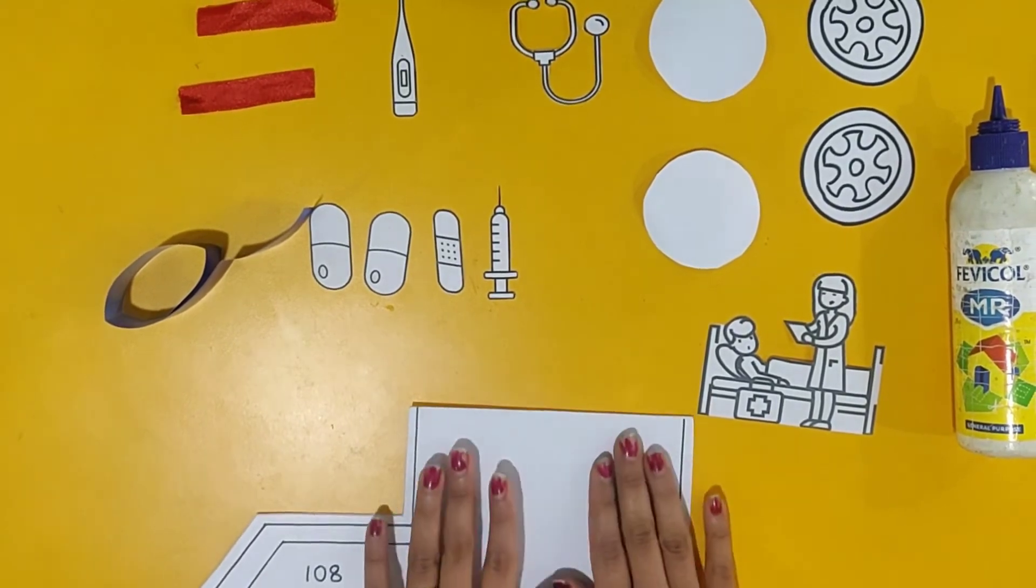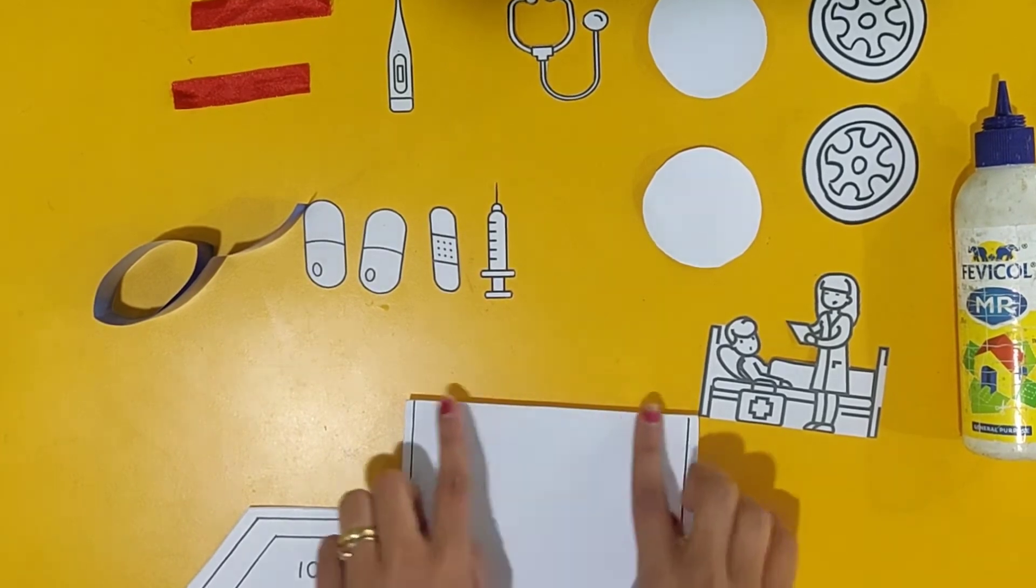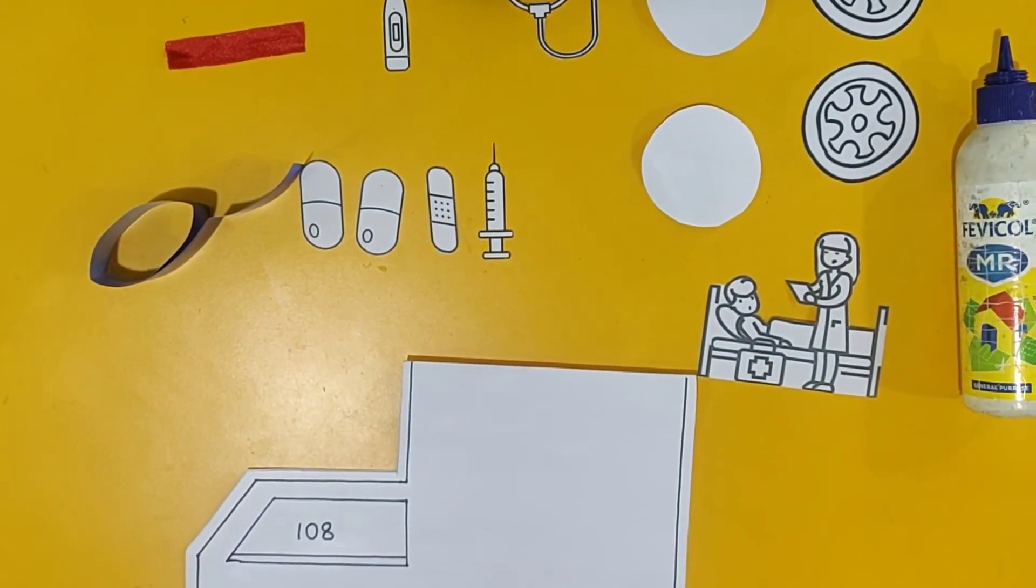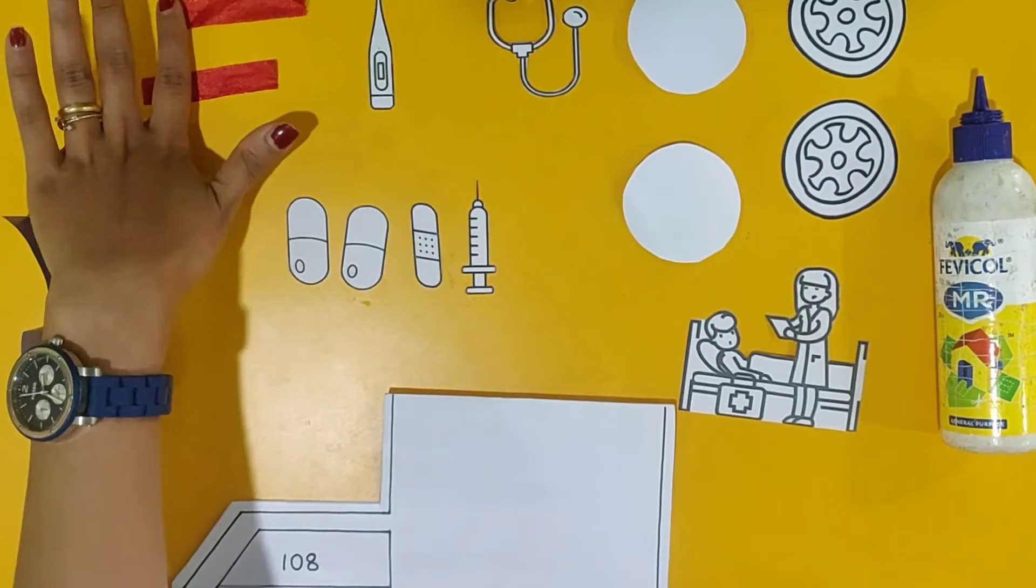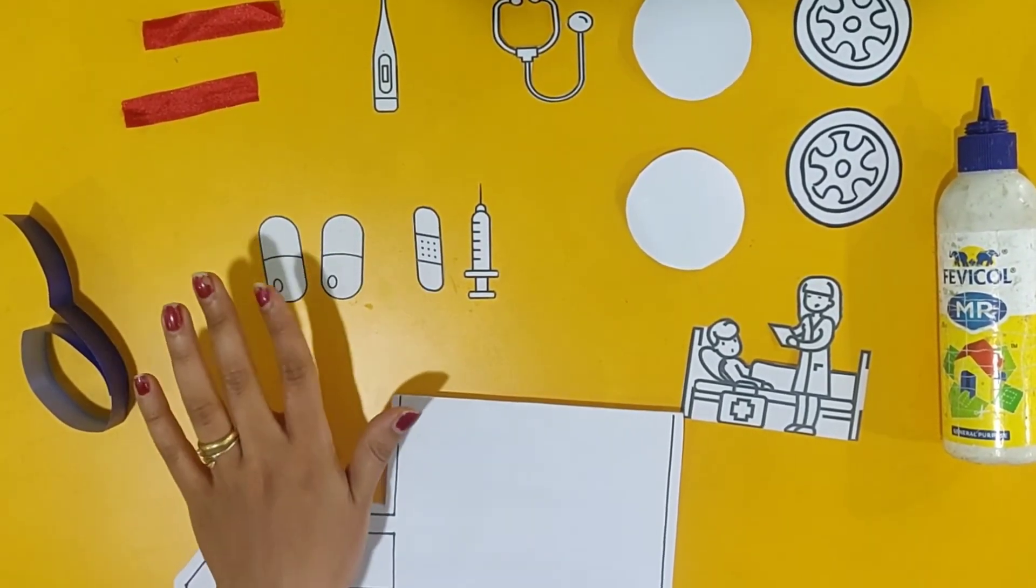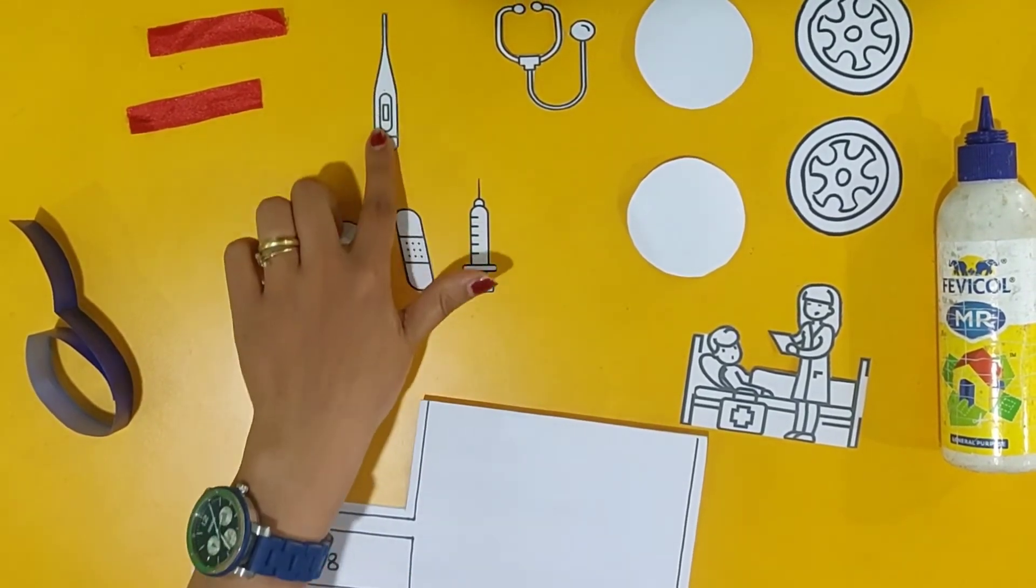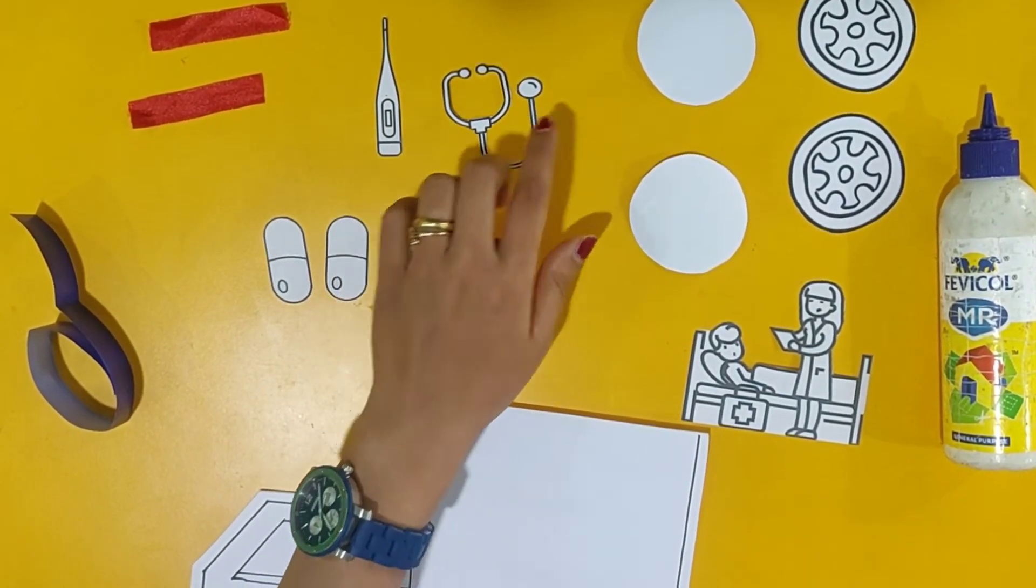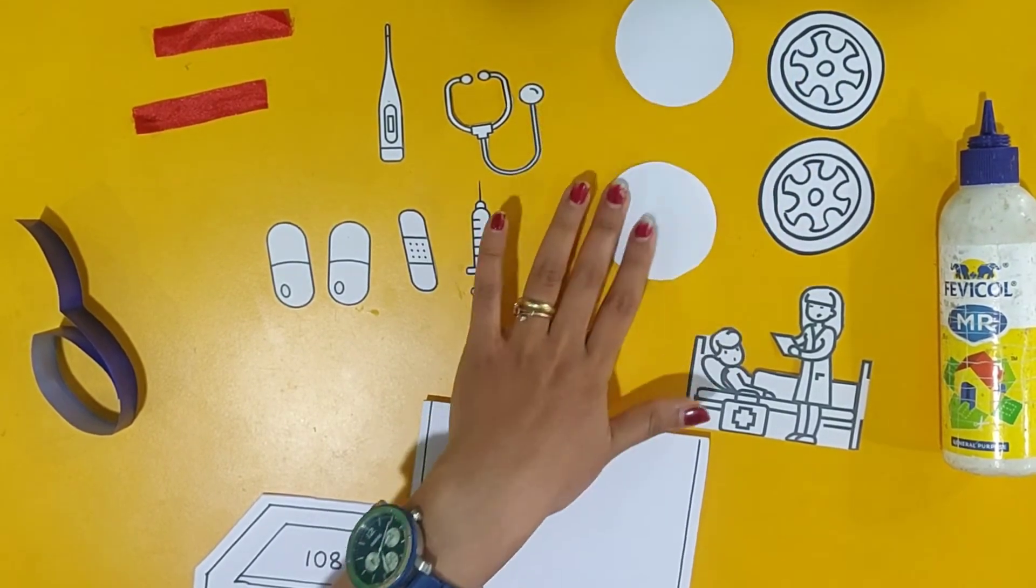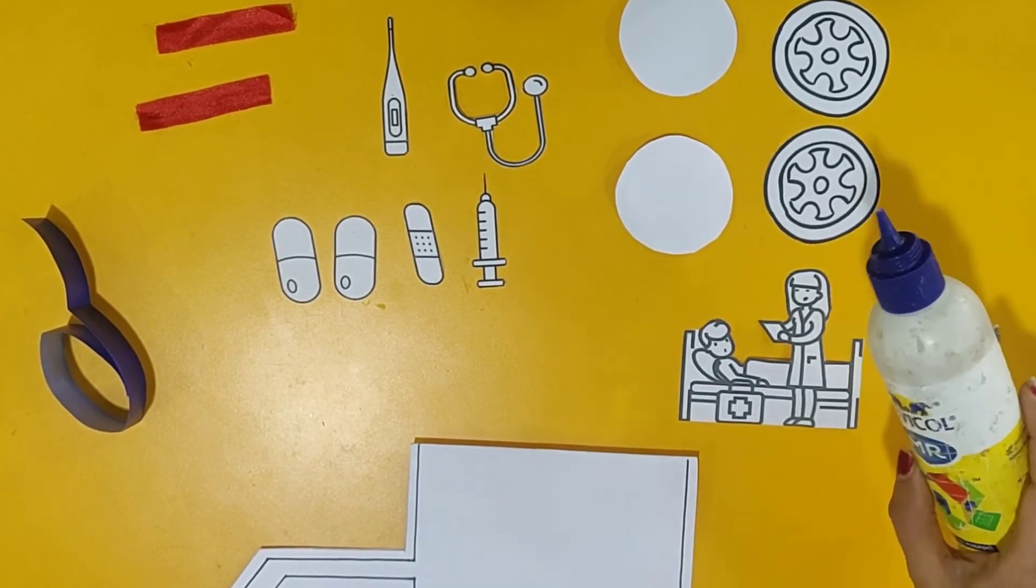Yes, so the things required for the activity is the ambulance cutout given in the kit, blue color ribbon, red color ribbon, capsules. Doctor gives us medicines, right? Bandage, injection, thermometer, stethoscope, wheels to make the ambulance car and a patient and a doctor and a fevicol.